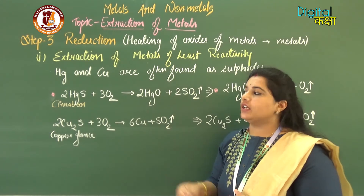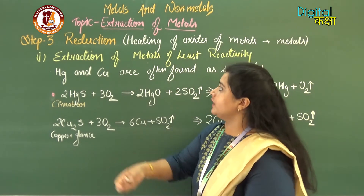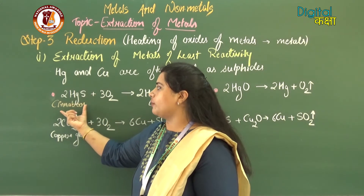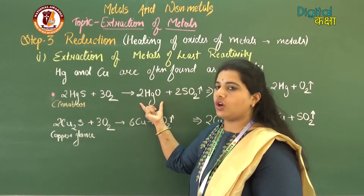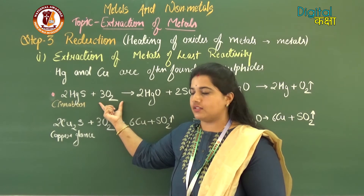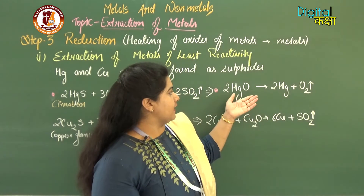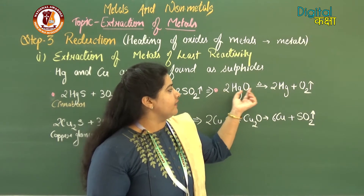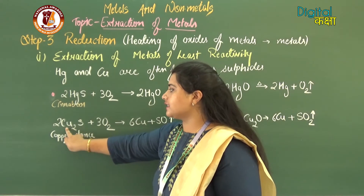First we discuss extraction of metals of least reactivity: silver, gold, mercury, and copper. Mercury and copper exist as sulfides while the rest exist in free state. For mercury, cinnabar (mercury sulfide, HgS) is treated with oxygen via roasting to convert it to mercury oxide (HgO). Then heating the mercury oxide causes it to release O2 gas, giving pure mercury metal.